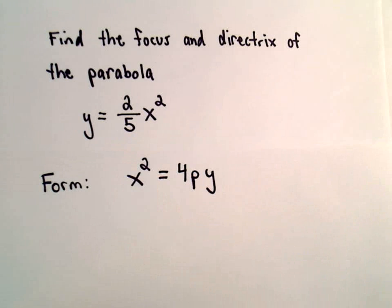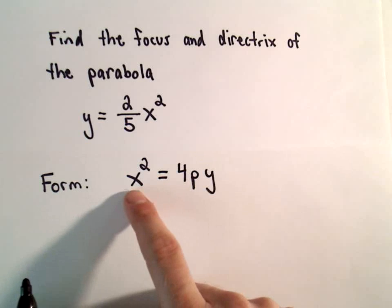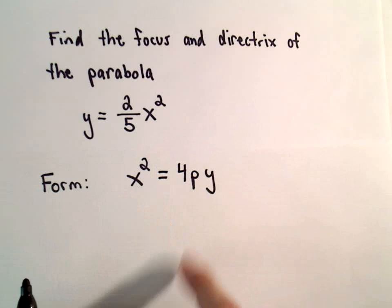And you're thinking, well, hey, okay, there's no p in there. But again, all it really says to do is get the x squared by itself. We can do that.